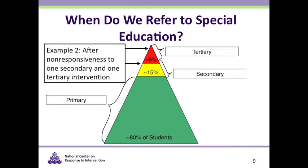In a second example, drawn from sites across the country, the district indicates that referral to special education occurs after a student demonstrates non-responsiveness to one evidence-based secondary intervention and then non-responsiveness to a more intensive tertiary intervention. In this model, data demonstrating the provision of appropriate instruction in general education settings includes progress-monitoring data collected from both the secondary and tertiary interventions. Essentially, the student is not sufficiently responsive to the secondary intervention and, in addition, is not sufficiently responsive to the tertiary intervention — at that point, the student may be referred for a special education evaluation.